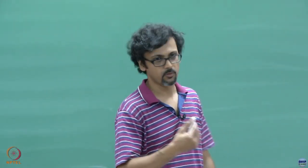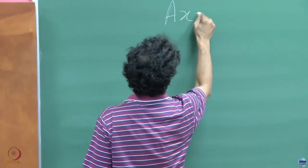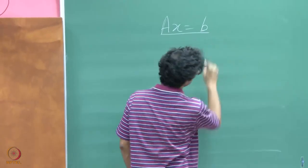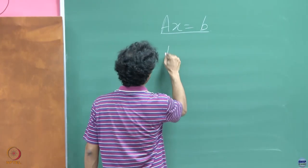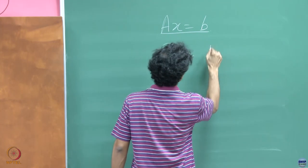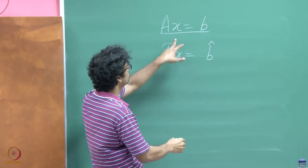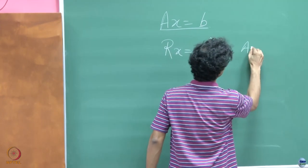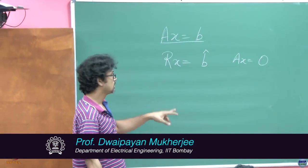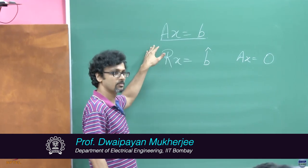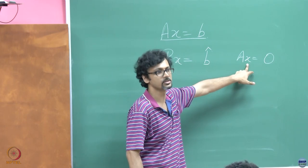Let us begin with a quick recap of what we have seen so far. We have tried to solve equations such as these and we saw that you can always take this A to a row reduced echelon form. We saw that if you want to solve for Ax = 0, under certain situations — precisely when you have a greater number of variables than equations — there will always be a non-trivial solution.